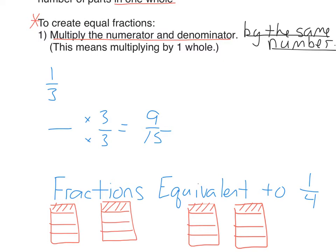If I take 1 third, right here, and I want to write an equivalent fraction, I want to create an equivalent fraction, I will multiply the numerator and the denominator by the same number. I'm going to choose a small number, 2. So when I do that, 1 times 2 is 2, 3 times 2 is 6, and 2 sixths is equivalent to 1 third, which means these are equal fractions.